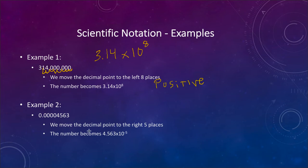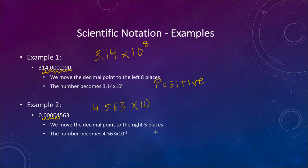Our second example goes the other direction. We have a very small number: 0.000045 63. We move the decimal point to the right 5 places until we get 4.563. Since we moved it to the right, the exponent is going to be negative — 10 to the negative fifth. So we can write 0.0000456 3 as 4.563 times 10 to the negative 5th power.